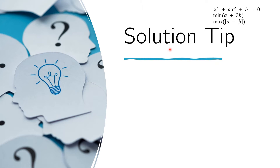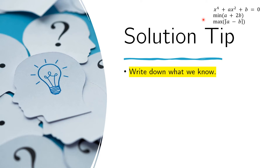For this problem, it's not immediately obvious how we are going to tackle the solution. So it is always helpful for these kinds of problems to write down first what we know, and that will help us find a possible path towards the solution. First, we know that B should be greater than or equal to zero — B must be non-negative — and we know this from the problem statement.